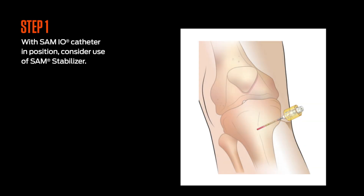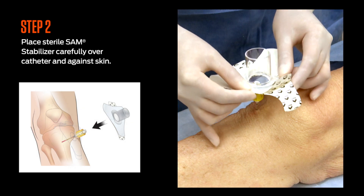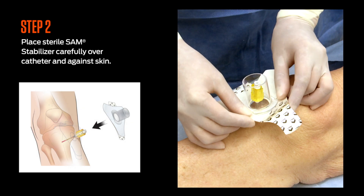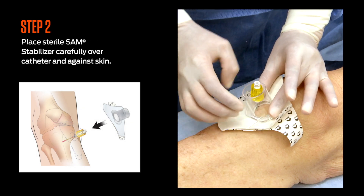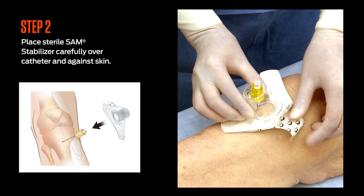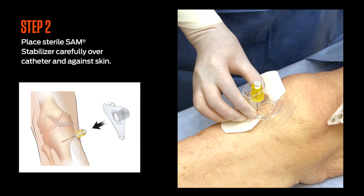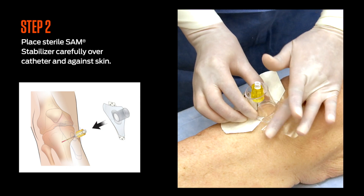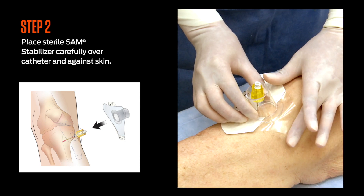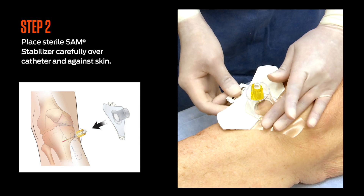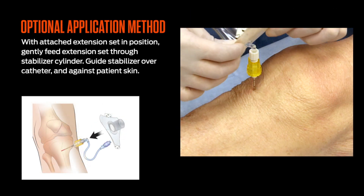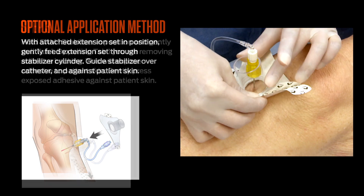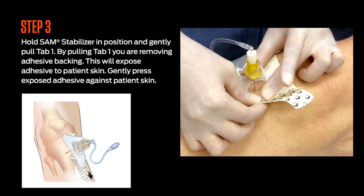The following is supplemental material. With the IO catheter in position, consider using the SAM stabilizer. There are two methods to attach it: place the SAM stabilizer carefully over the catheter and against the skin, then attach the primed extension set to the SAM-IO catheter; or alternatively, attach the extension set first and then apply the SAM stabilizer.